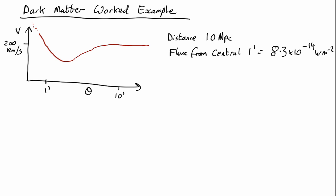In this video I'm going to show you how we calculate the dark matter content of a galaxy. Let's assume we have an edge-on galaxy at a distance of 10 megaparsecs from the Earth. We've pointed the telescopes at different positions at different distances from the centre, at different angles, and we find the velocity curve looks like this.